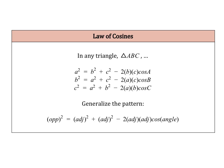The law of cosines tells us that in any triangle ABC, we can set up this type of equation. There are three different scenarios depending on what information we're given. The generalized pattern is: the opposite side squared equals adjacent side squared plus adjacent side squared minus 2 times the adjacent sides times the cosine of the angle that we know or are trying to find.